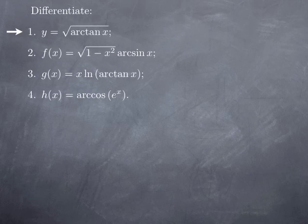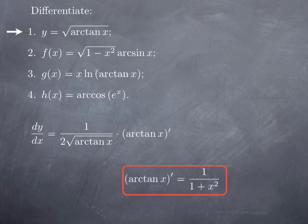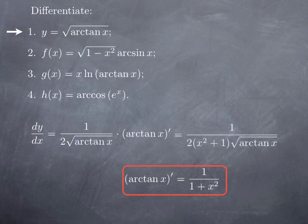We get the derivative of the square root function, which is 1 over 2 square root, evaluated at the inside function — so we get 1 over 2 square root of arctan x — but then we multiply by the derivative of arctan x. Since the derivative of arctan x is 1 over 1 plus x squared, we get 1 over 2 times (x squared plus 1) times square root of arctan x.